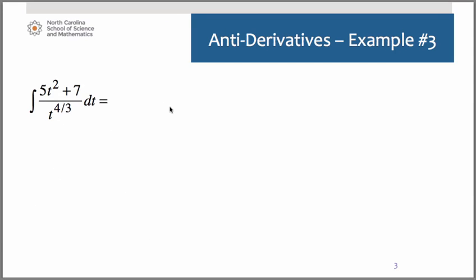Yet another one we'll have to simplify using our laws of exponents. If we have t squared over t to the four thirds, subtracting the exponents, we get five t to the two thirds. And then we have seven t to the negative four thirds. We're going to add one to our exponents.